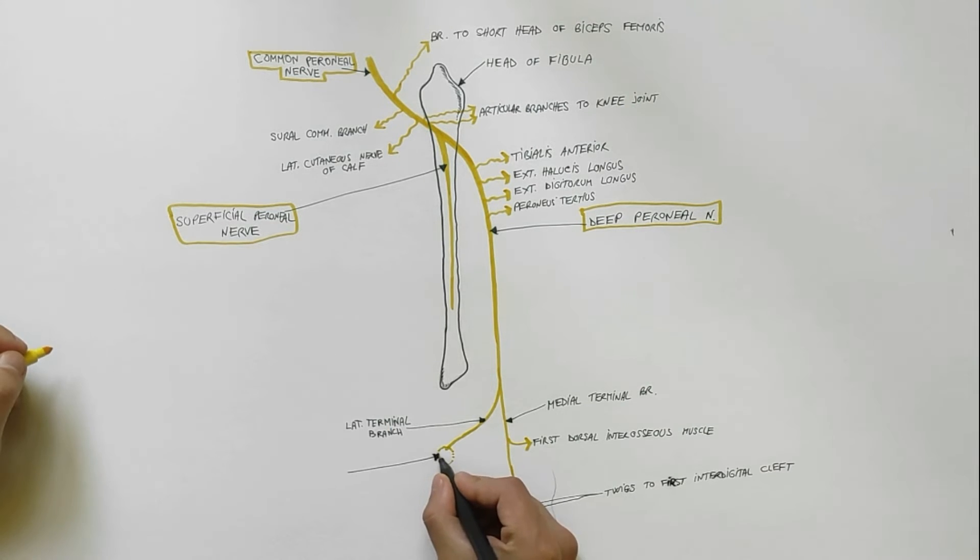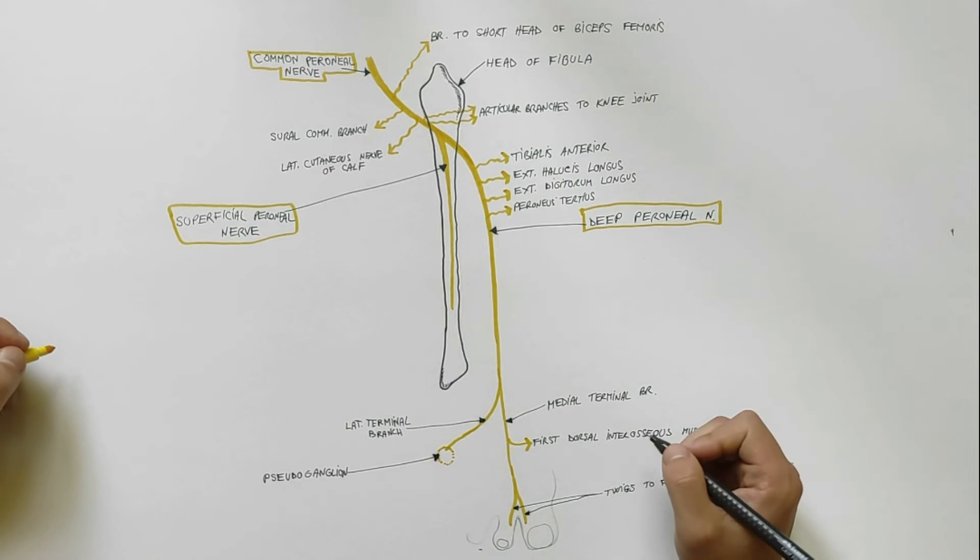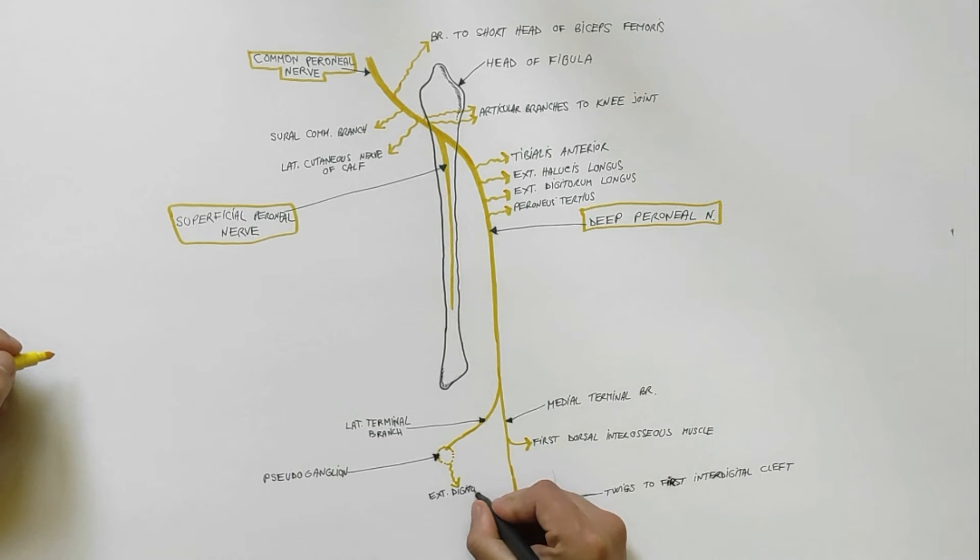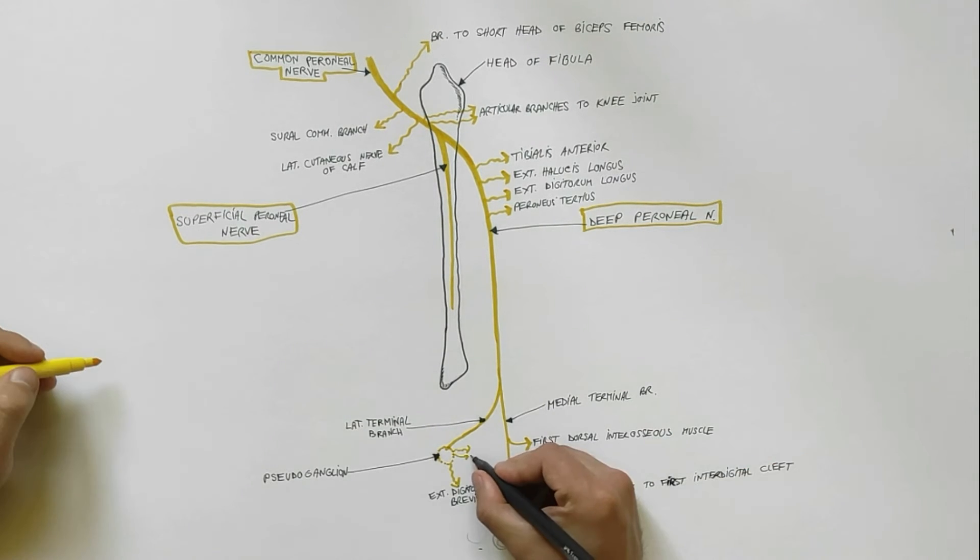The lateral terminal branch ends in a pseudoganglion placed under the extensor digitorum brevis. From this pseudoganglion arise branches to extensor digitorum brevis and articular branches to tarsal and metatarsophalangeal joints.